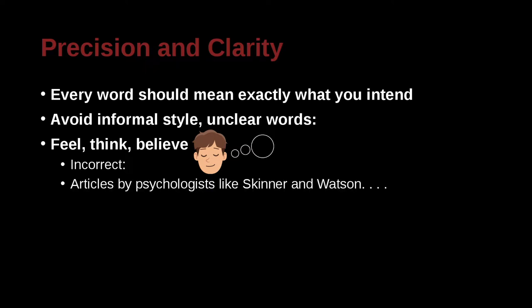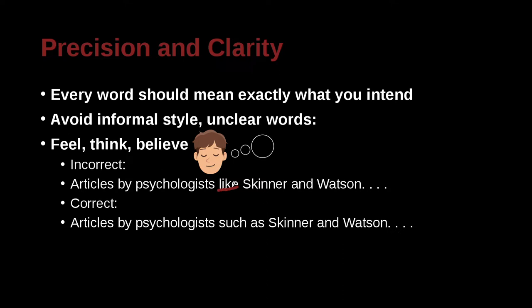Consider articles by psychologists like Skinner and Watson — here we've got a problem with the word 'like.' What does that 'like' mean? The correct way would be to say 'articles by psychiatrists such as,' because 'like' could mean they prefer, or it could mean similar. I would go further and just say Skinner and Watson. If you have other similar articles, just cite them. Cut it down to be very clear and concise.